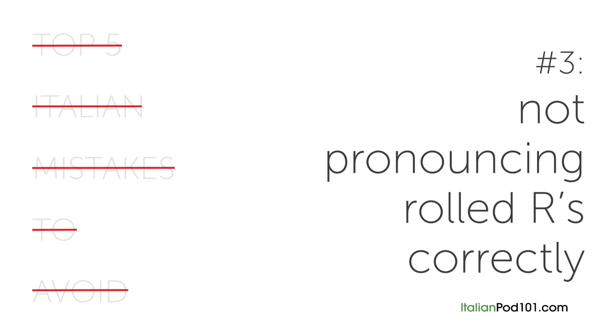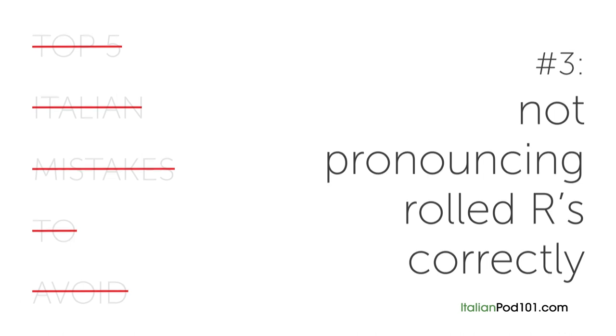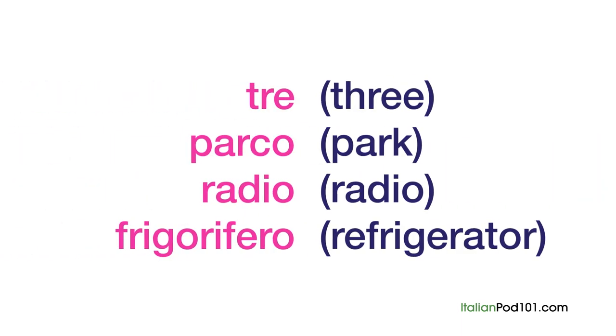Number three: not pronouncing rolled R's correctly. This is arguably the most difficult sound for Italian learners to pronounce correctly. It's quite a complex sound — in fact, it's one of the last sounds that Italian children learn to pronounce. The only way to solve this problem is to keep listening to native Italian speakers and practicing it yourself. We'll learn more about this sound in Lesson 7.